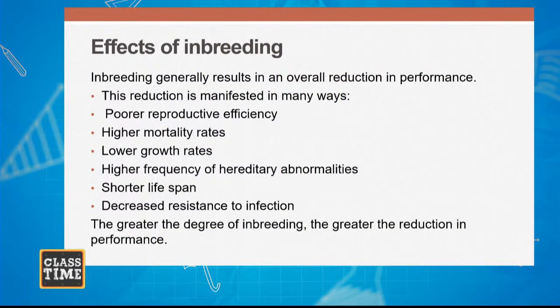Once inbreeding takes place, it's going to reduce the productivity of the offspring in many ways. These are some effects: poor reproductive efficiency, higher mortality rates, lower growth rates, higher frequency of hereditary abnormalities, shorter lifespan, and decreased resistance to infection. For example, when we talk about lower growth rates — sometimes farmers have the herd running together, goats moving up and down together with inbreeding taking place. You find that these animals are not growing in height or in weight, and this most times is as a result of inbreeding.